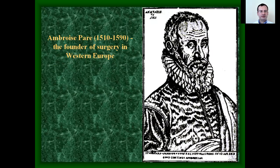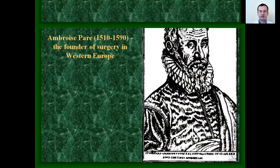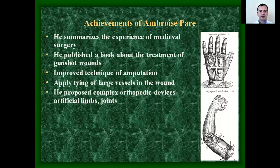Ambroise Paré was the founder of surgery in Western Europe. His achievements included: summarizing the experience of medieval surgery, publishing a book on the treatment of gunshot wounds, improving techniques of amputation, applying tying of large vessels in wounds, and proposing complex orthopedic devices, artificial limbs and joints.